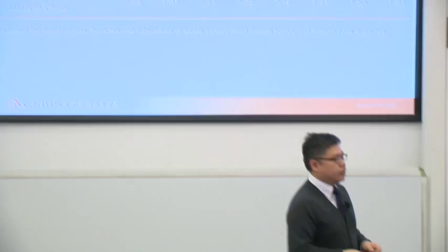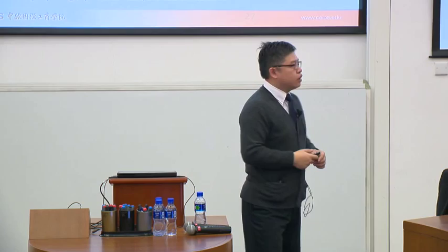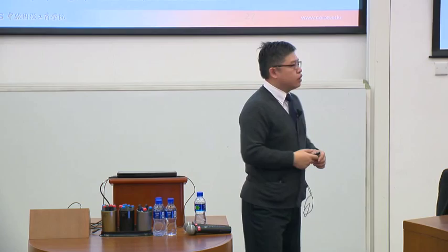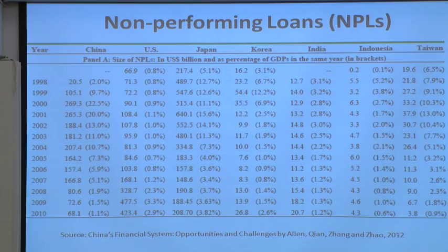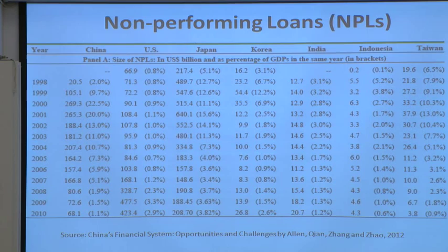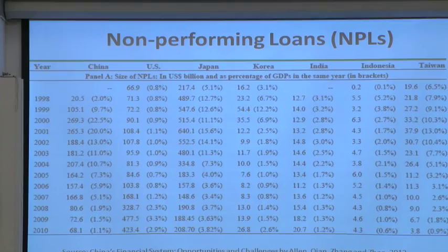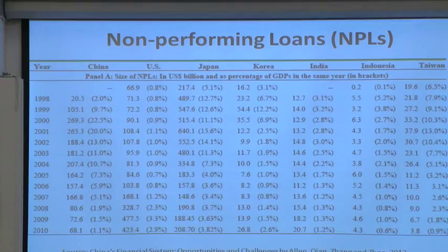This diagram shows the ownership structure. In China, the majority of shares of commercial banks are owned by the government, which is different from other countries. A consequence of government ownership and control is non-performing loans, because commercial banks are not purely profit-oriented. They serve as a second government, helping to implement macroeconomic policies initiated by the State Council.